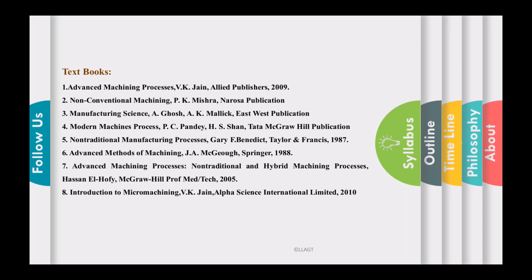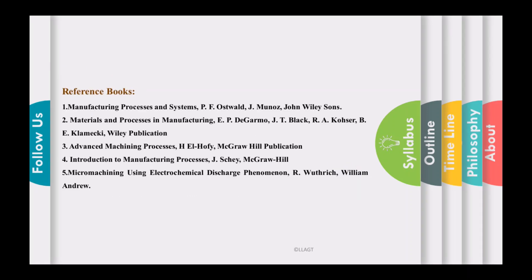For study material, I recommend the following books: first, Advanced Machining Processes by V.K. Jain, Allied Publications; second, Non-conventional Machining by P.K. Mishra; third, Manufacturing Science by Amitabh Ghosh and A.K. Mallik; fourth, Modern Machining Processes by P.C. Pandey; and fifth, Non-conventional Machining Processes by Gary Boothroyd. Reference books are also listed for those who want to go deeper into research or projects.